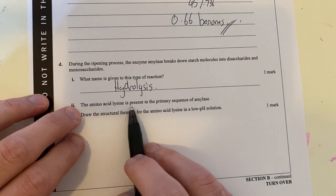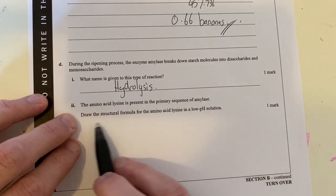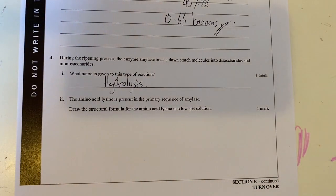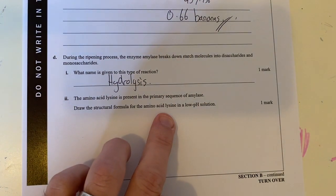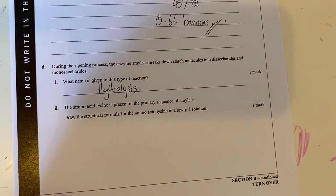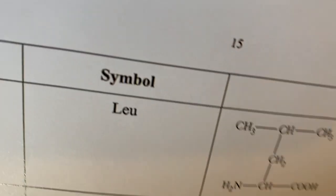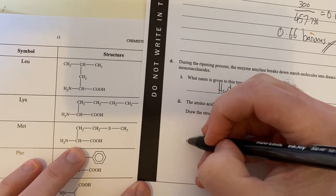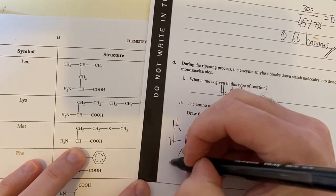The amino acid lysine is present in the primary structure sequence of amylase. Draw the structure of this amino acid in a low pH solution. I need to get to my data booklet and find the structure of lysine, and it's in a low pH. Low pH means lots of hydrogen, so it's going to be a protonated structure. I found lysine in the data booklet.